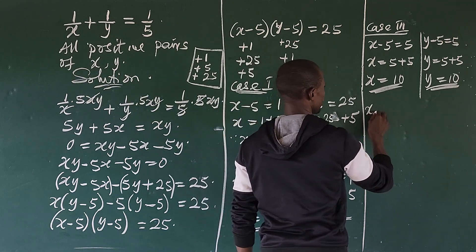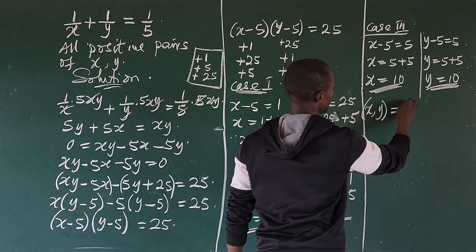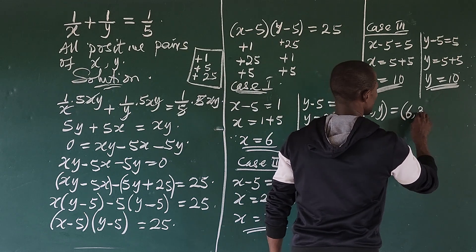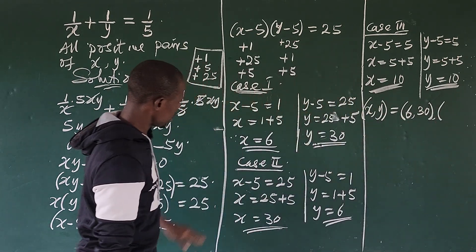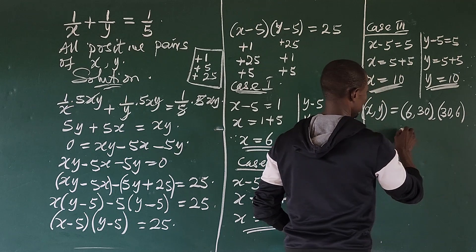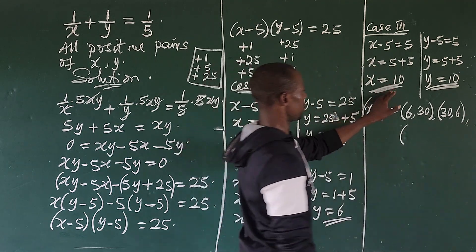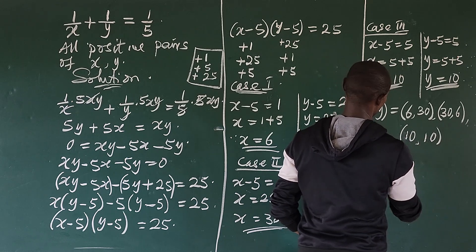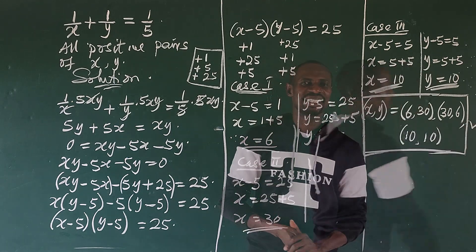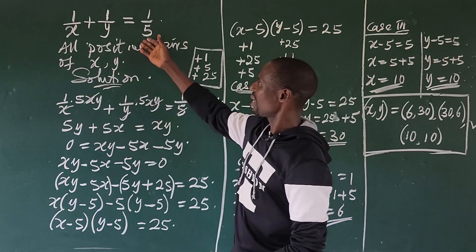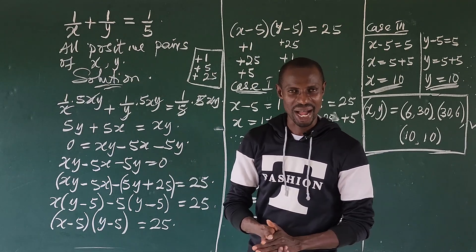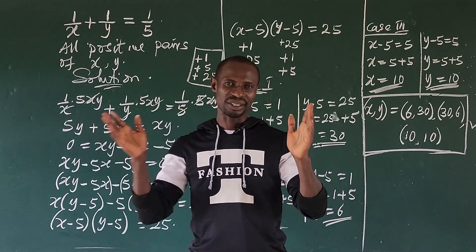So we have all the positive pairs of (x, y) that satisfy this equation. For Case 1 we have (6, 30); for Case 2 we have (30, 6); and for Case 3 we have (10, 10). These are the three pairs that satisfy this algebraic equation.